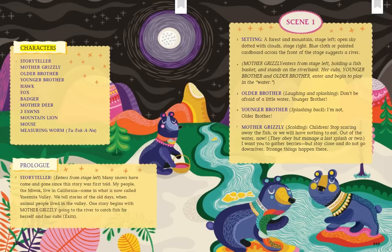Characters: Storyteller. Mother Grizzly. Older Brother. Younger Brother. Hawk. Fox. Badger. Mother Deer. Two Fawns. Mountain Lion. Mouse. Measuring Worm. To talk a nah.